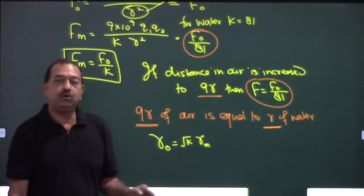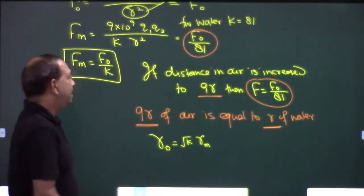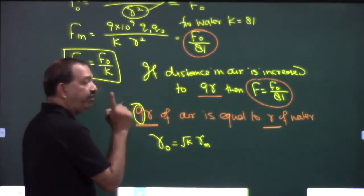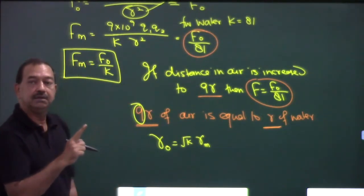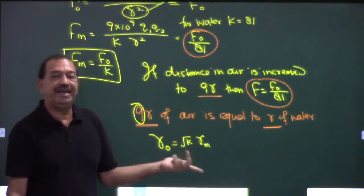Distance in air is root k times of distance in medium. 9R - 9 is what, root of 81. So air distance is root k times of medium distance.